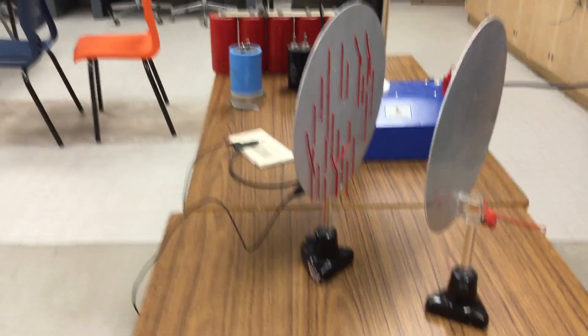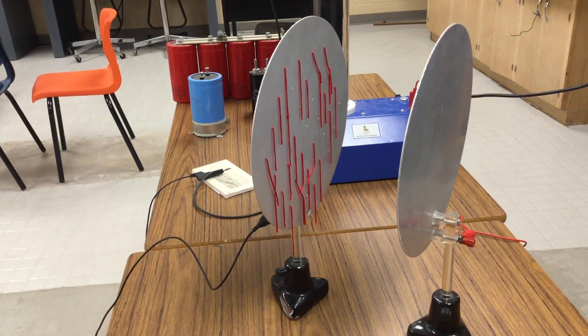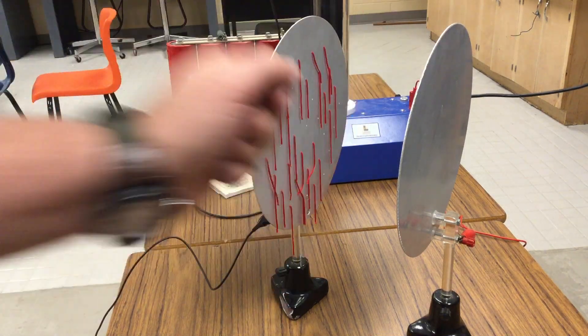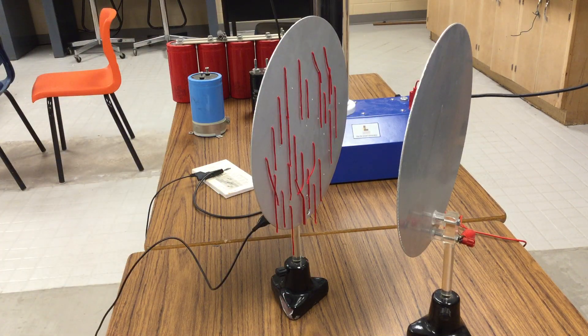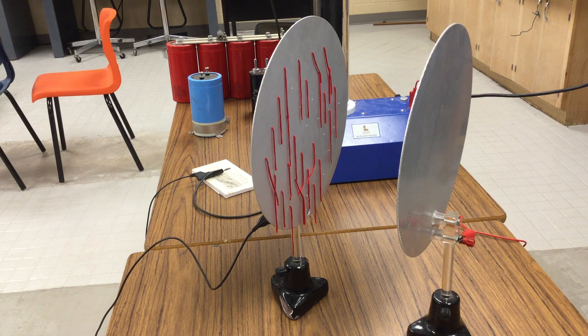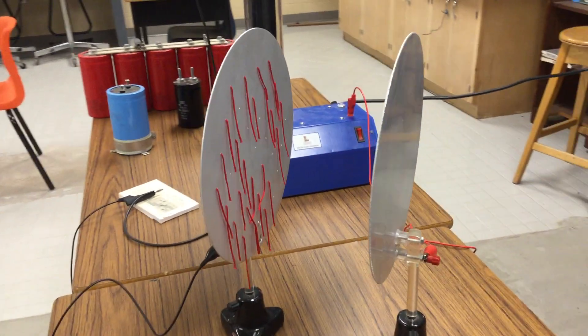A simple capacitor is nothing more than two plates separated by an air gap or some sort of gap. Now depending on the characteristics of that gap, it'll increase or decrease our capacitance. So let's take a closer look at this, shall we?